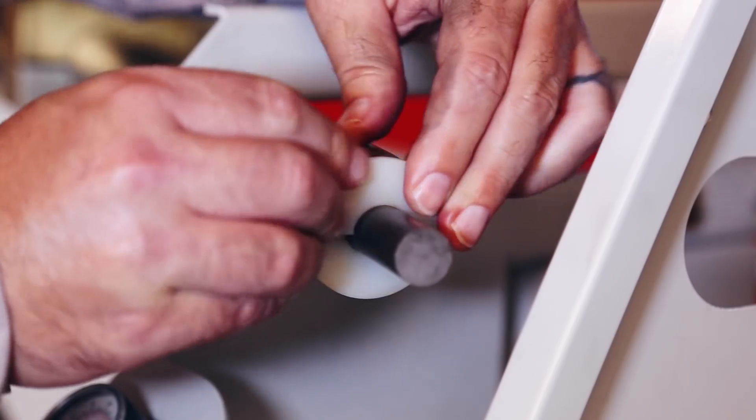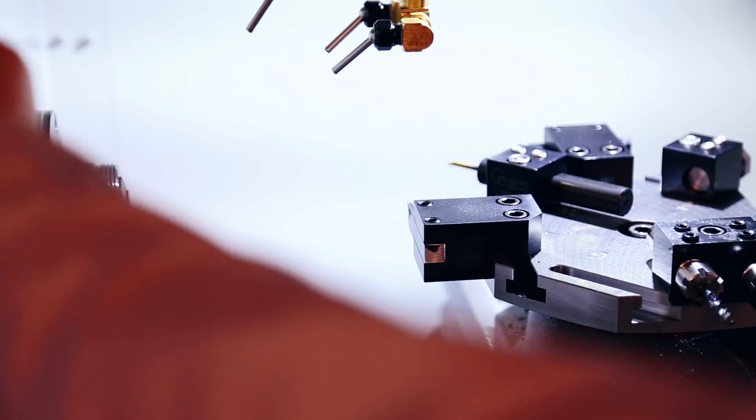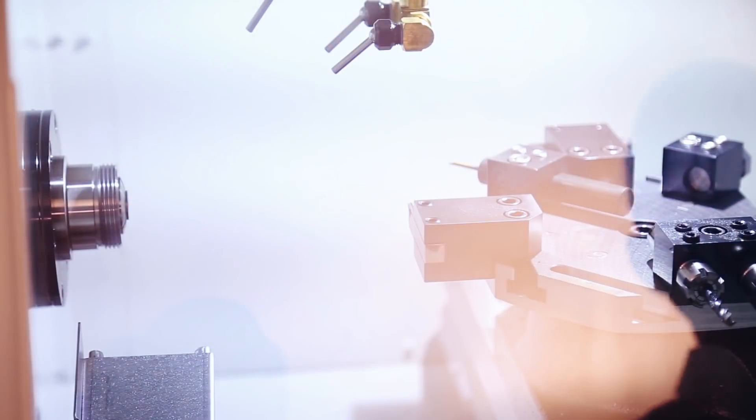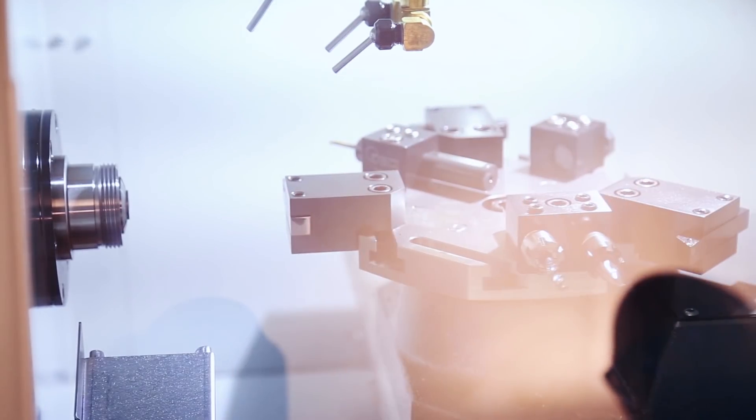If I'm loading a new bar, I'll push the bar flush with the face of the collet. Then I'm gonna close the collet, close my door, and then I'm gonna start my program from the G105. G105, down arrow, cycle start, the control does the rest.